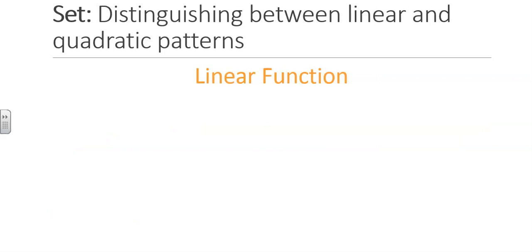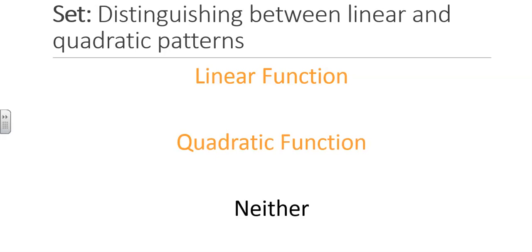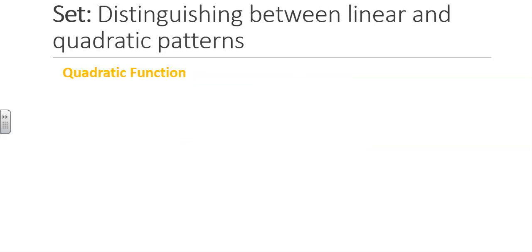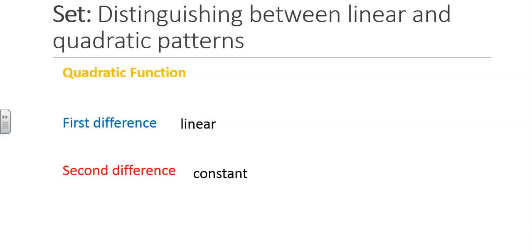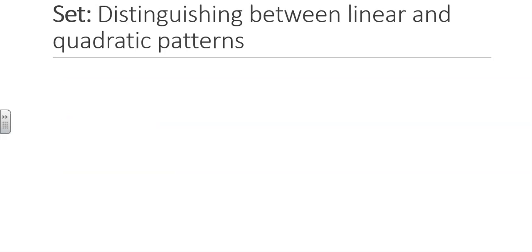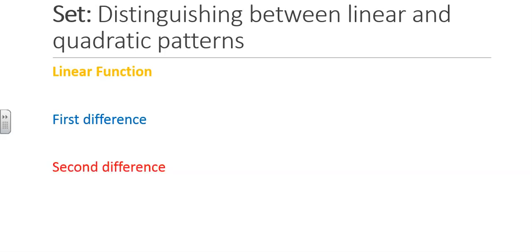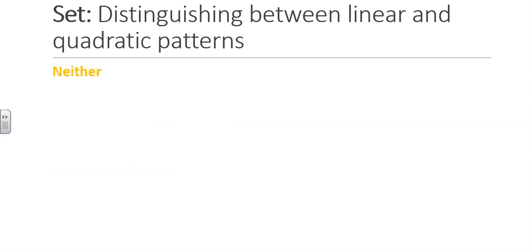As you examine each table, you will need to determine whether the pattern is linear, quadratic, or neither. Apply the understanding you gained today in class and compare the first and second differences of the functions. If the first difference is linear and the second difference is constant, you have a quadratic function. If the first difference is constant, then you have a linear function. If there is no pattern in the first difference, then you have neither a linear nor a quadratic function.